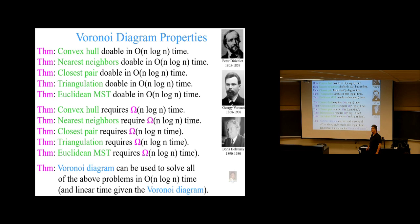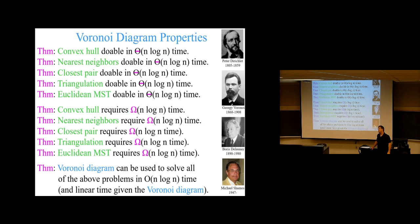There are a lot of problems, all of which require an n log n lower bound, and they're all doable with an n log n upper bound once you have the Voronoi diagram. So the question is: how do you solve all these problems in optimal time? The short answer is by obtaining the Voronoi diagram first. So the question becomes: how do you get the Voronoi diagram, and how do you do it quickly?